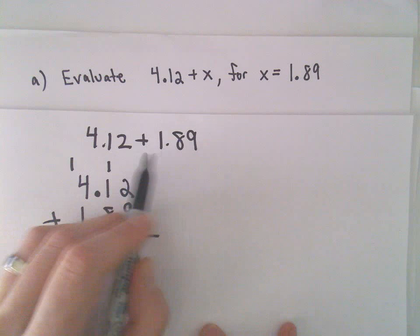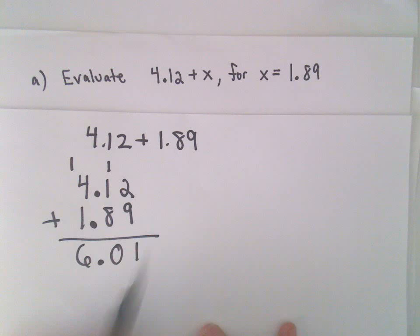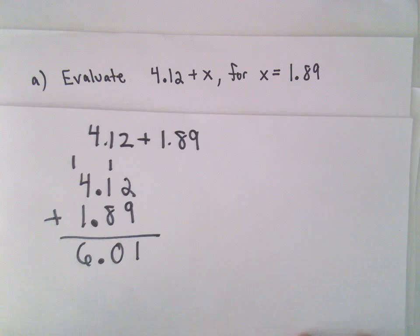So if you got $4.12 and then somebody gives you another $1.89, you've got $6.00 and a penny.